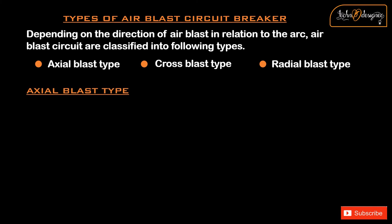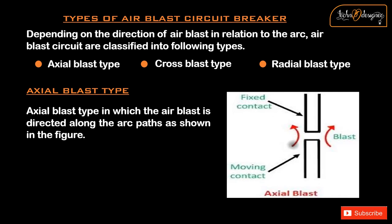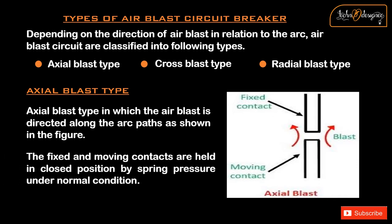Axial blast air circuit breaker: In the axial blast type, the airblast is directed along the arc path, as shown in the figure. The fixed and moving contacts are held in closed position by spring pressure under normal conditions.